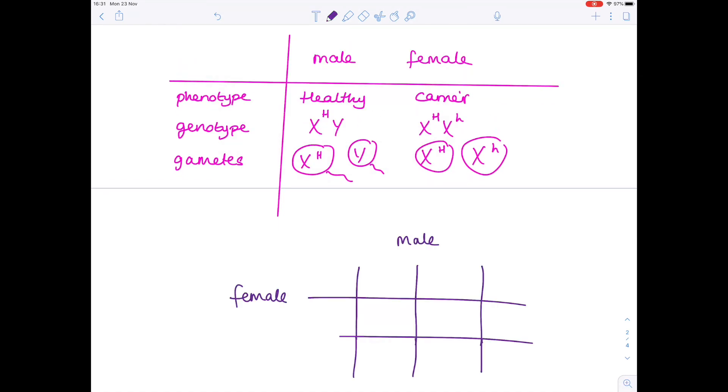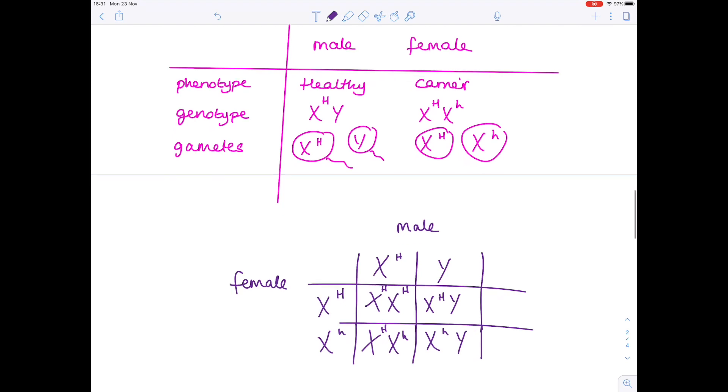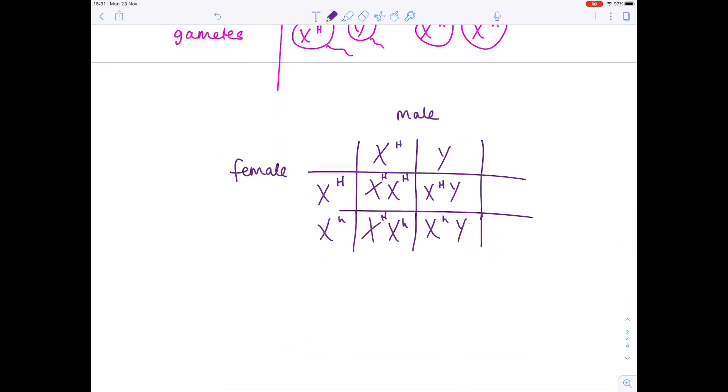So we're ready to do our Punnett square now. Our male, we just copy down the gametes that we've worked out. So we have that X and that large H, the Y, the female, we have X uppercase H, X lowercase h. Now we're ready to cross those alleles. So you just rewrite them. And now you need to point out, and this is what people always forget to do, what these genotypes are showing.